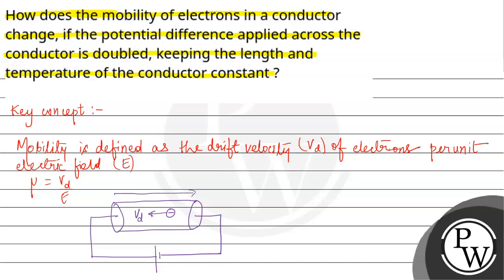The electric field direction is always from higher potential to lower potential. The formula for electric field is E equals V by L. With the help of this key concept, we will proceed further.